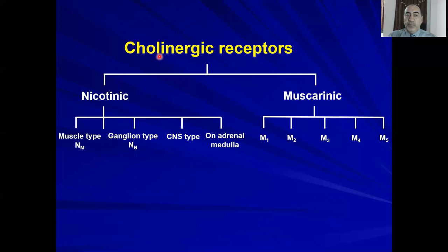Number one: classification of cholinergic receptors. Cholinergic receptors are the receptors for acetylcholine and agonist drugs — drugs that can act like acetylcholine. These receptors are subdivided into nicotinic and muscarinic receptors.